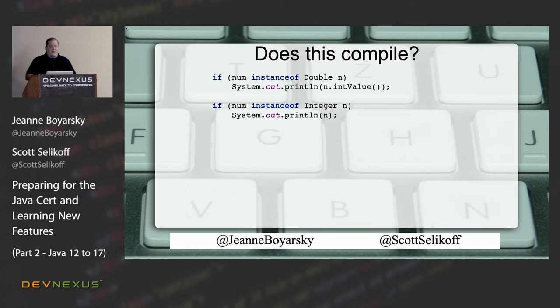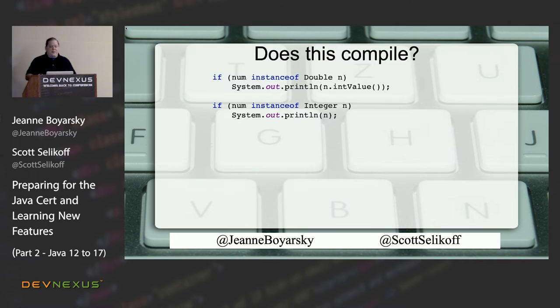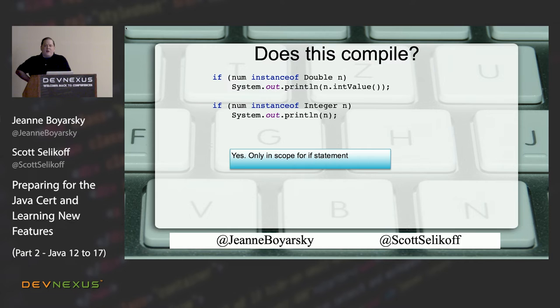Can you use the same pattern variable name in two separate if statements? Yes, this compiles. Each pattern variable is only in scope for its specific block via flow scope. As long as the scopes don't overlap, reusing the same variable name is allowed.